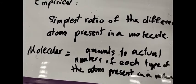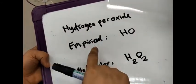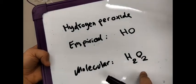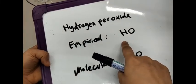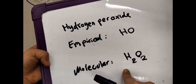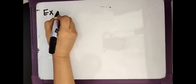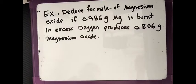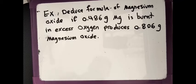For example, hydrogen peroxide has empirical formula HO, but molecular formula H₂O₂. Sometimes the masses of each element present in a sample are given and you are asked to deduce the empirical formula. For example, deduce the formula of magnesium oxide if 0.486 grams of magnesium burns in excess oxygen producing 0.806 grams of magnesium oxide.